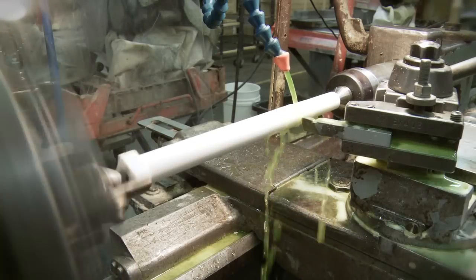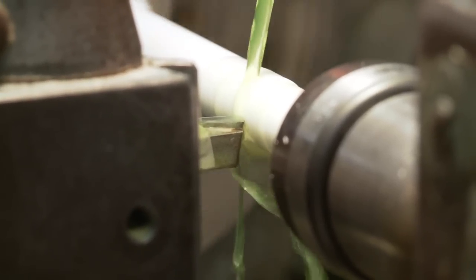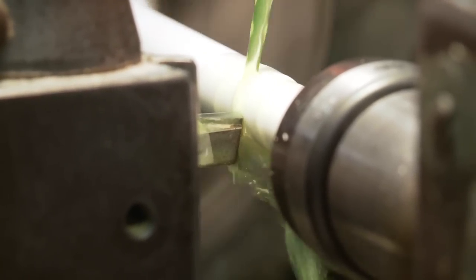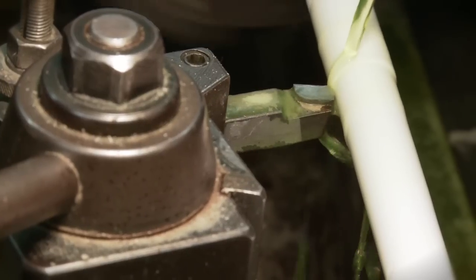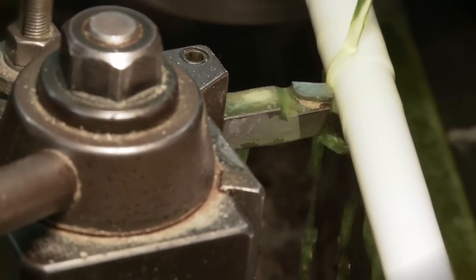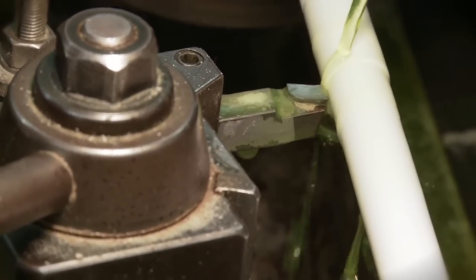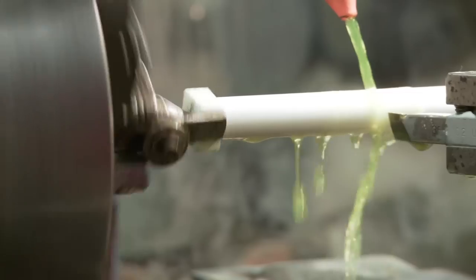When turning the diameter of a Macor rod, a cutting speed of 30 to 50 surface feet per minute is suggested at a feed rate of 2 to 5 thousandth of an inch per revolution. It is also suggested that the depth of cut not exceed 250 thousandths of an inch.